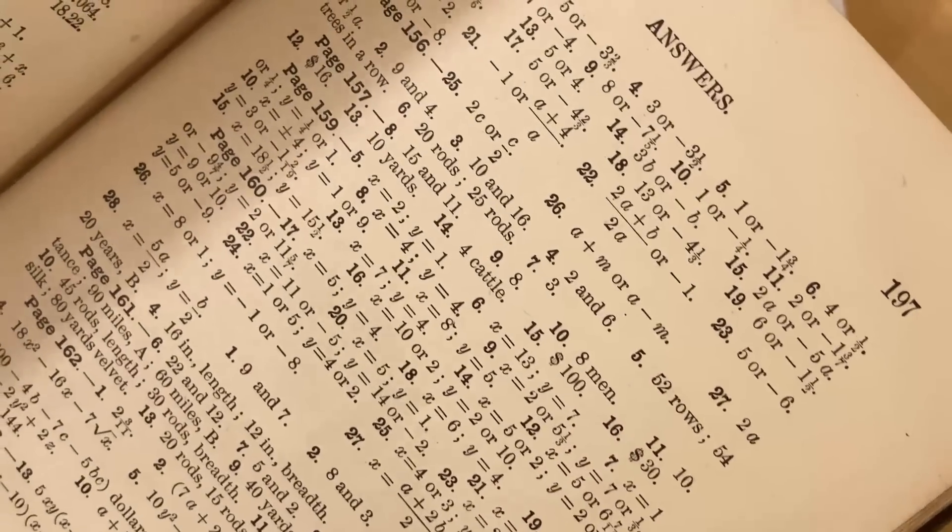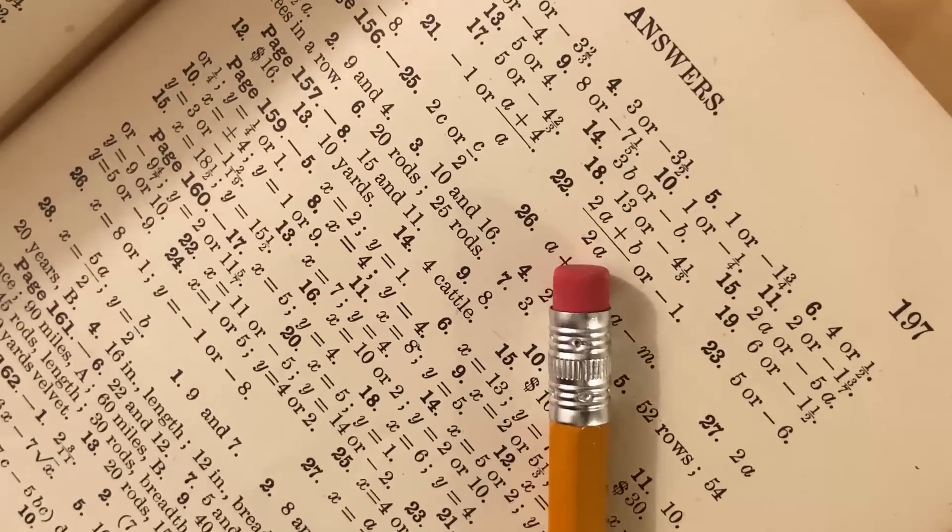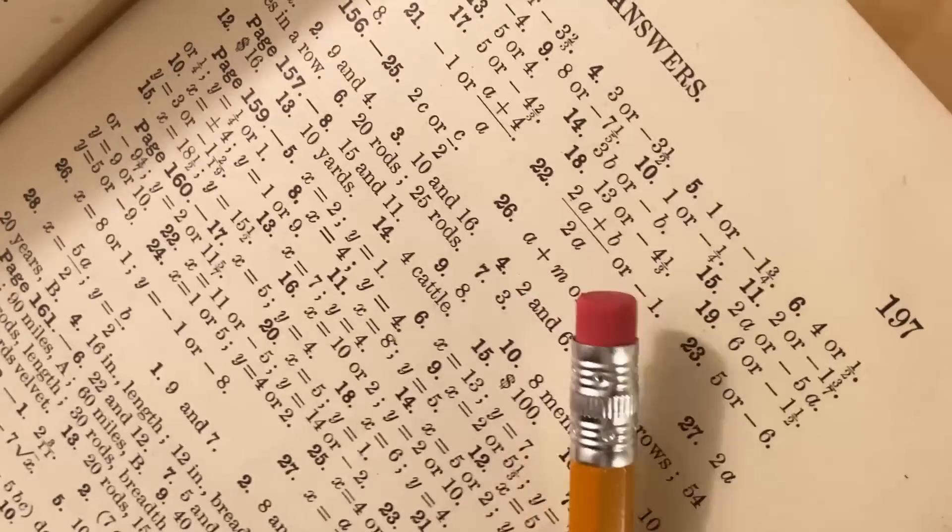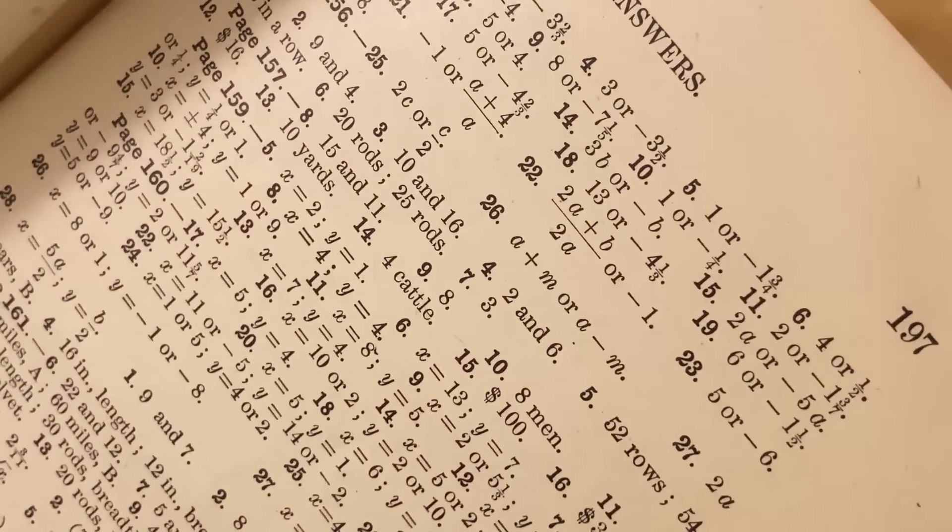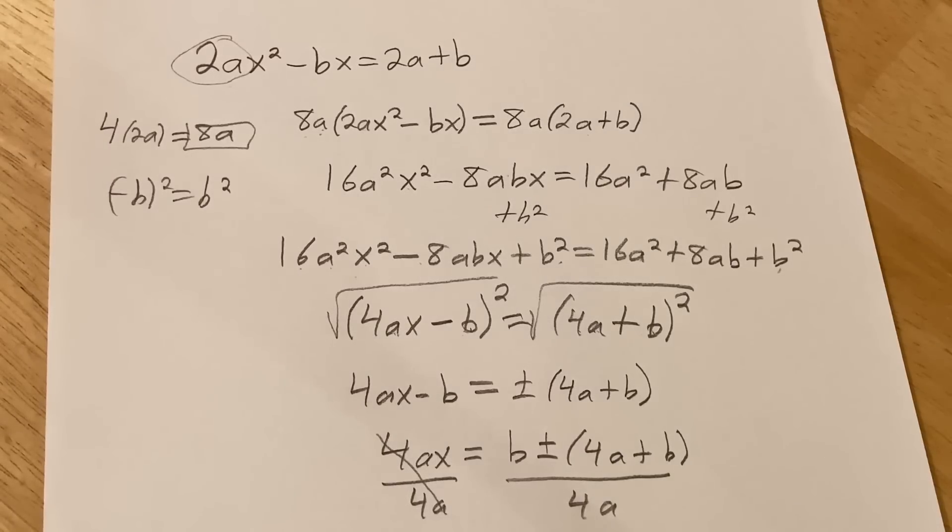So what we should do now is we should check our answers. Awesome. There is the answer right there. You see it? 2a plus b over 2a or negative 1. So the answer is correct. Feels really good to do it right. Just a quick recap and then we'll talk about the book.